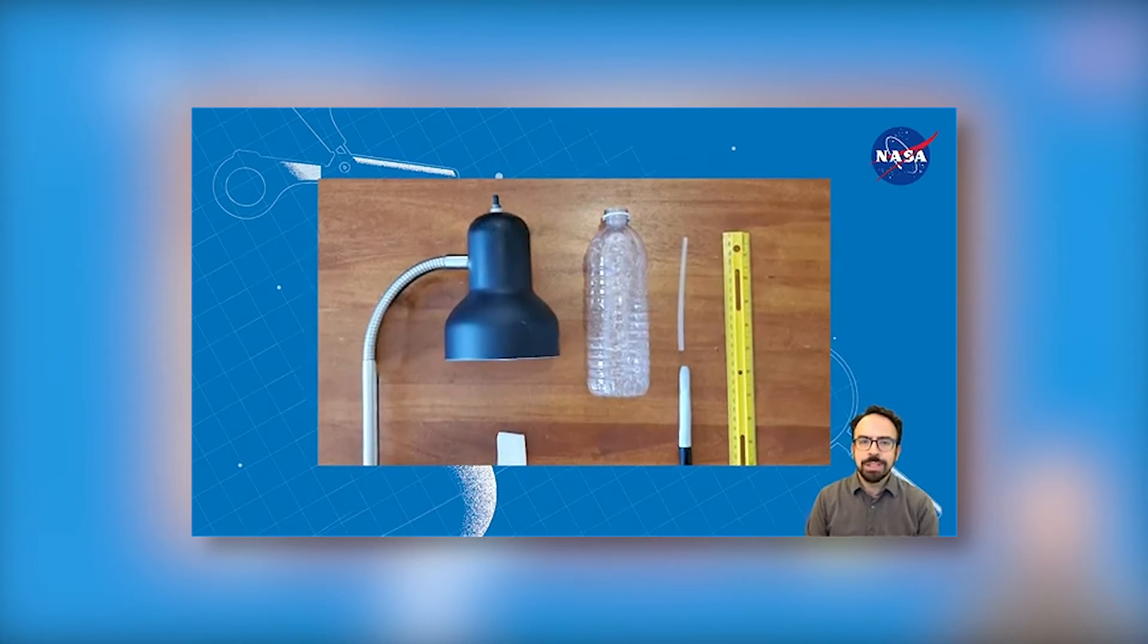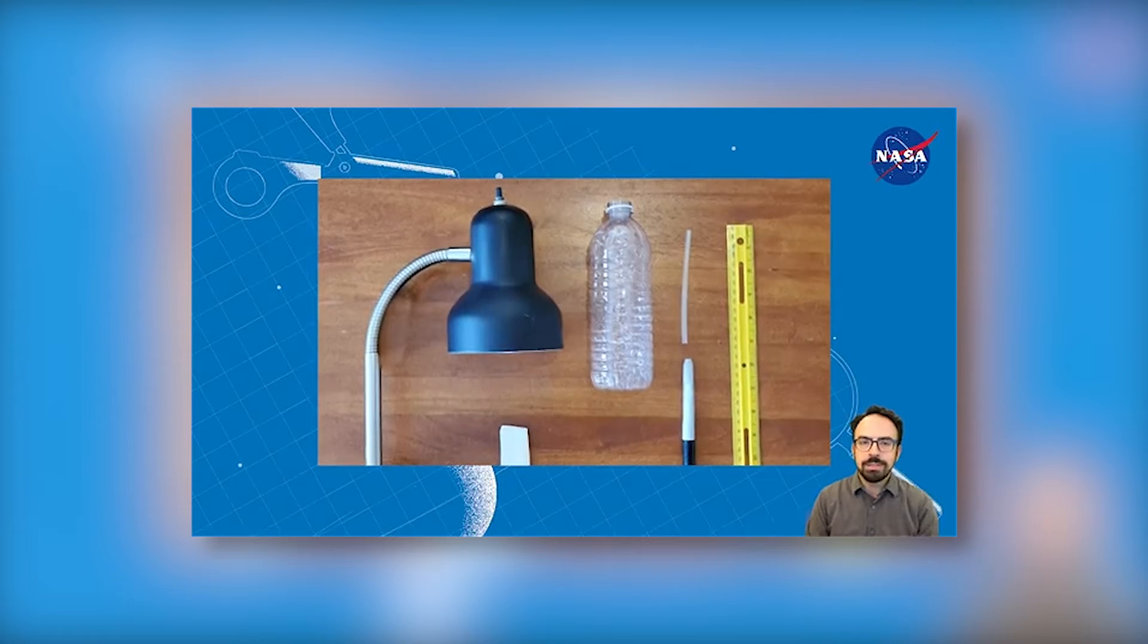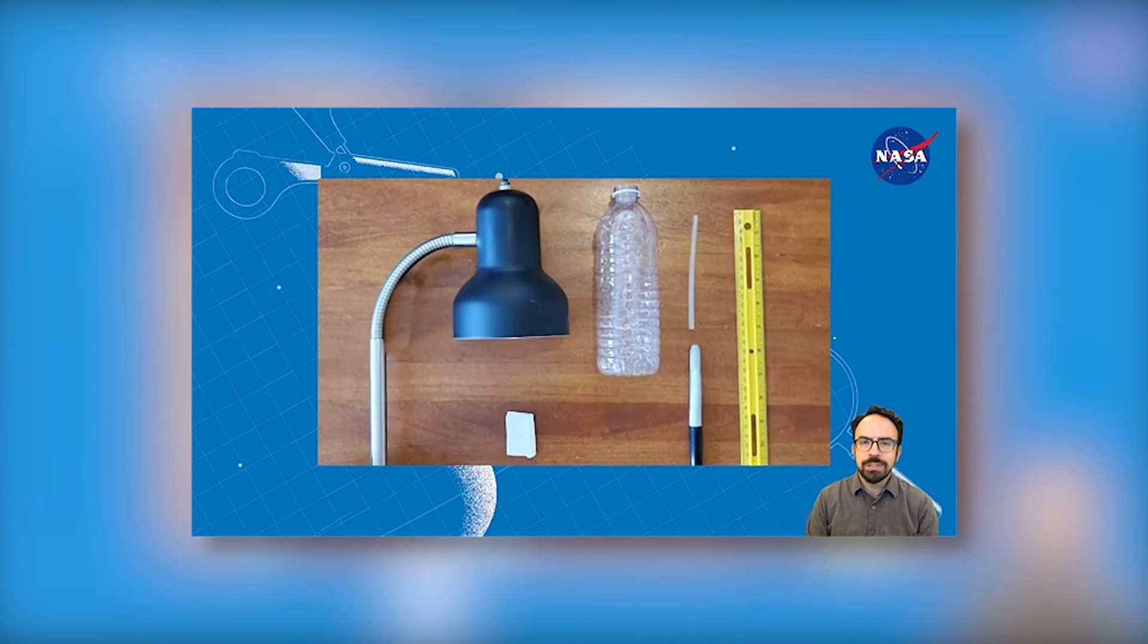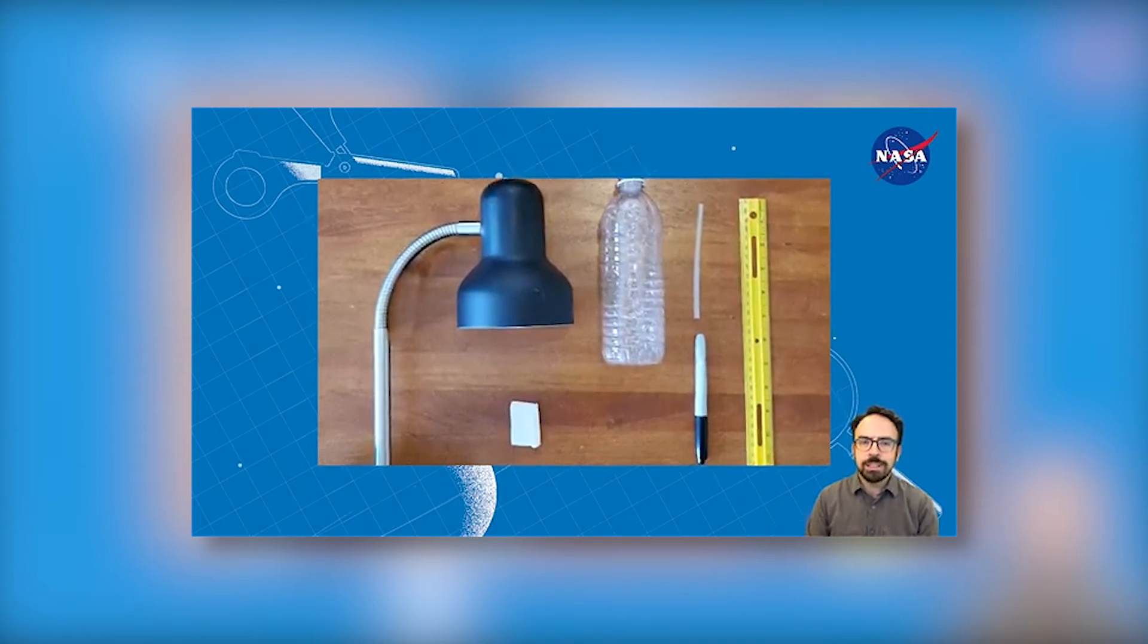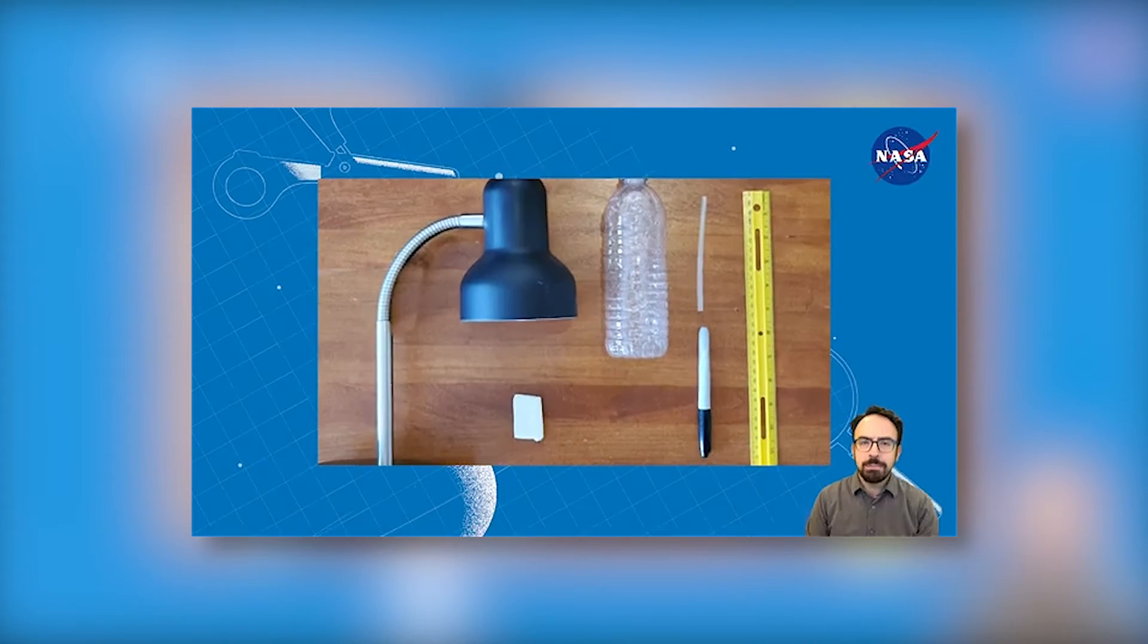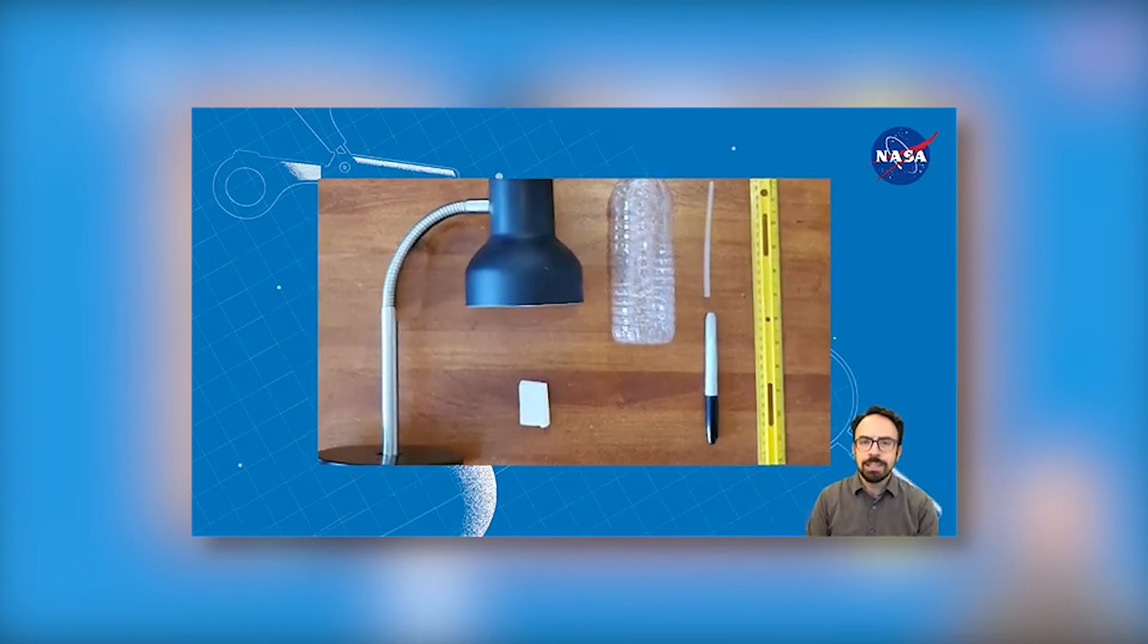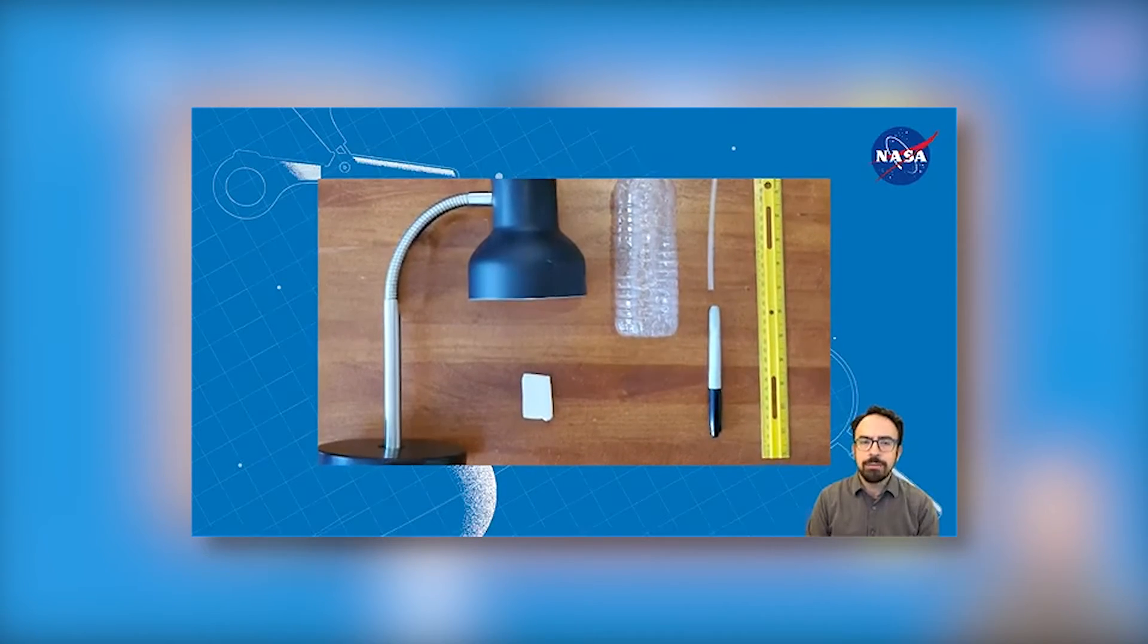Start by gathering your materials. You'll need a water bottle. I'm using a recyclable bottle, but reusable ones made out of thick, sturdy plastic work too. You'll also need a clear plastic drinking straw, clay, putty, or a similar soft flexible sealant to seal the top of the bottle, a marking pen, and a ruler if you have one.